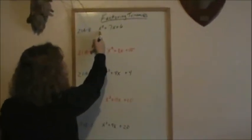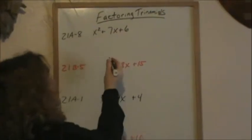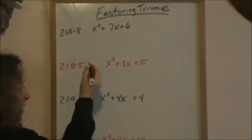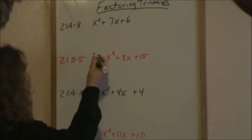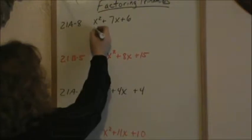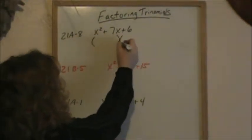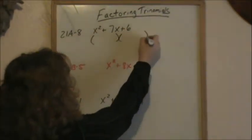We are going to be factoring trinomials. Trinomials means three terms — one, two, three. Most of the time, trinomials will factor into two binomials. Two binomials has two terms.